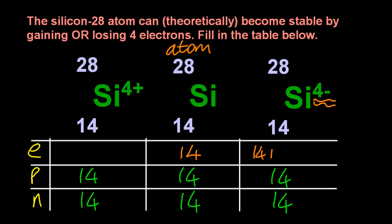Now, that's 4 minus. It's gained four electrons, four negative electrons. So the charge is now 4 minus.